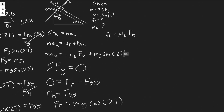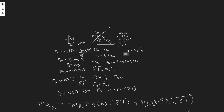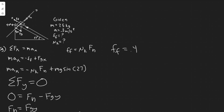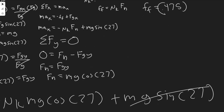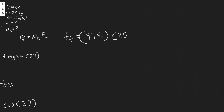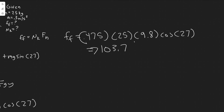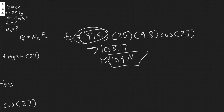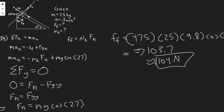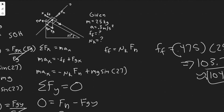Now that we have mu sub k, we can find the force of friction using FF = mu_k × N. Substituting: FF = 0.475 × mg × cos(27) = 0.475 × 25 × 9.8 × cos(27). Computing this gives approximately 103.72, so about 104 newtons. Note that the exact calculator value was used for mu_k here.